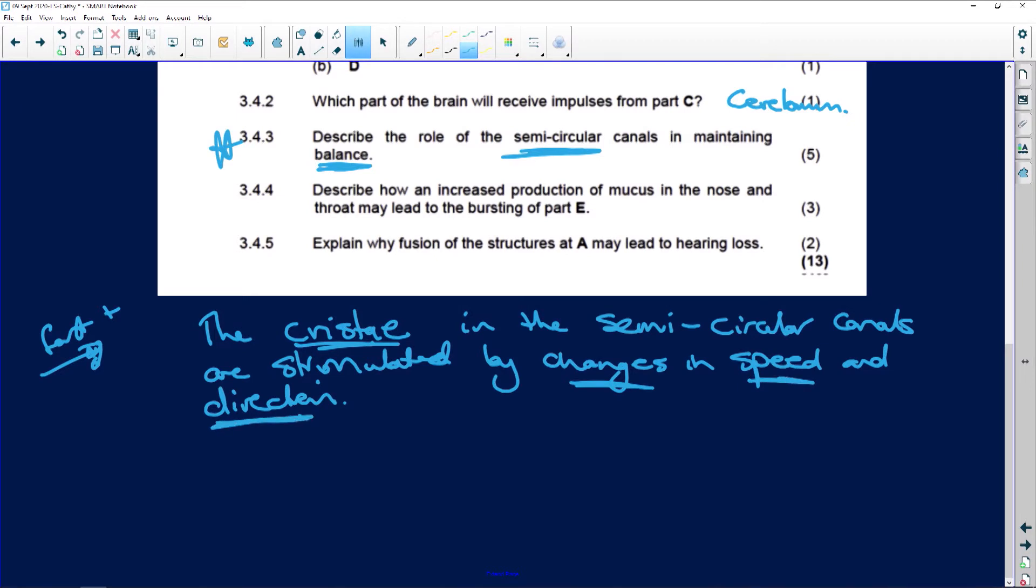It's the cristae in the semi-circular canals that are stimulated by changes in speed and direction. Then cristae convert - because remember these are mechanoreceptors - so the cristae convert the stimuli into impulses.